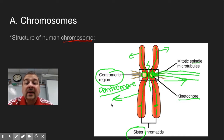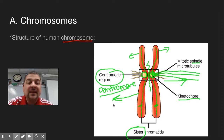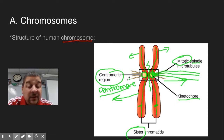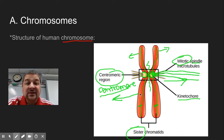Remember, the daughter cells formed in mitosis are going to be genetically identical to the mother cell. In the next video, we're going to show how the nucleus and this DNA — because that's a very important part of the cell — is divided up equally so that each daughter cell can be genetically identical.